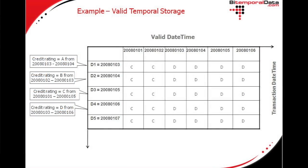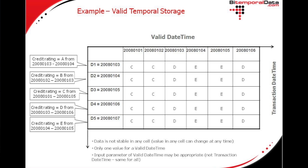Events D and E bring further corrections. So we've seen how the data is not stable. There is one value for every valid date-time. That shows us that an input parameter of valid date-time may be appropriate for querying. However, an input parameter of transaction date-time would not be appropriate as an input parameter for this type of data.